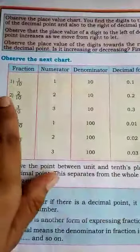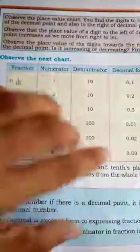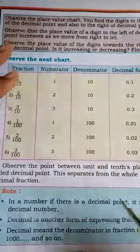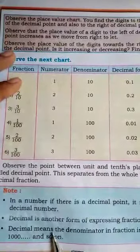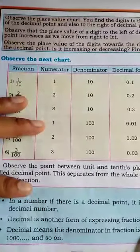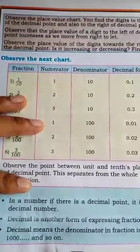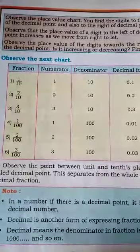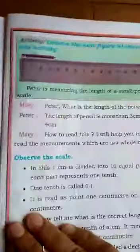The decimal form of a fraction number is another form of expressing fraction. Decimals mean the denominator in fraction is 10, 100, 1000 and so on. If the denominator is 10, 100, or 1000 then only we can convert it to decimal form.